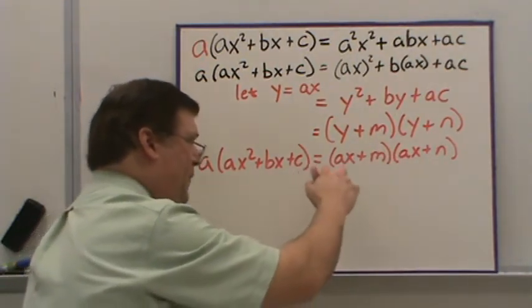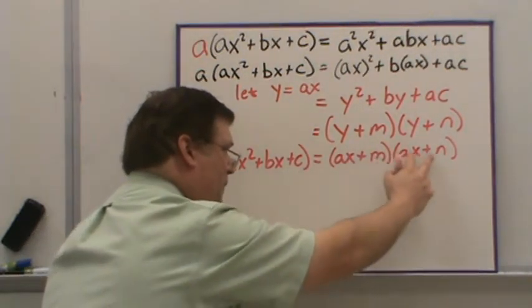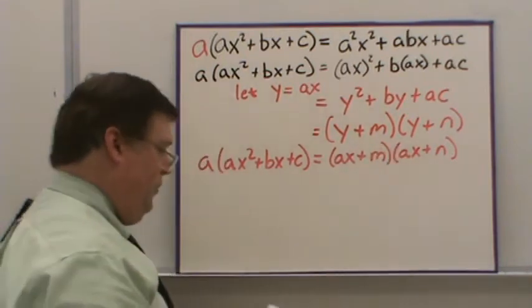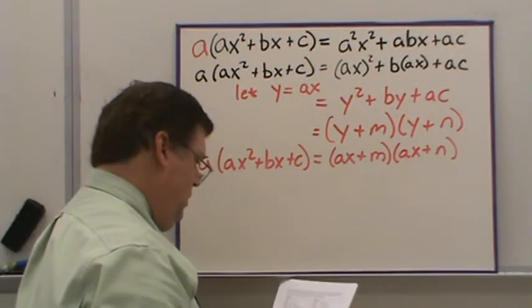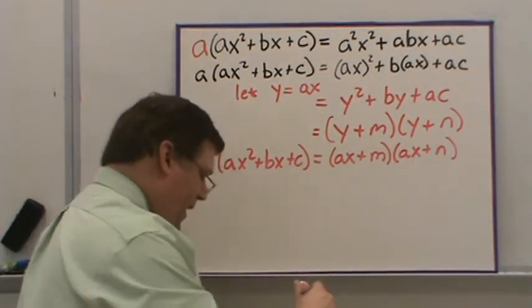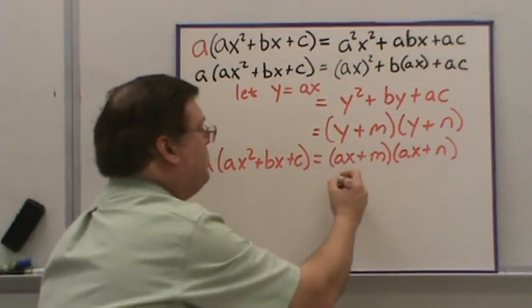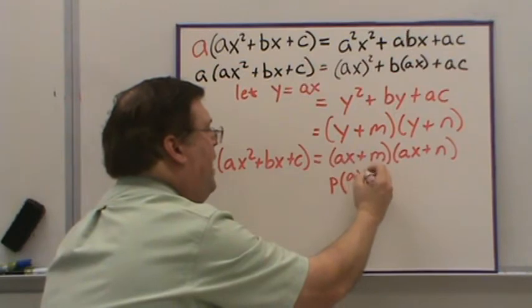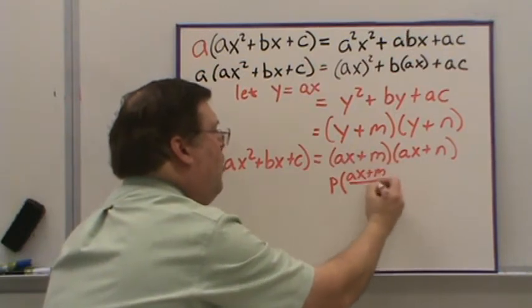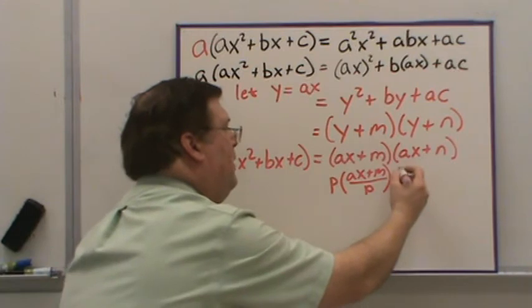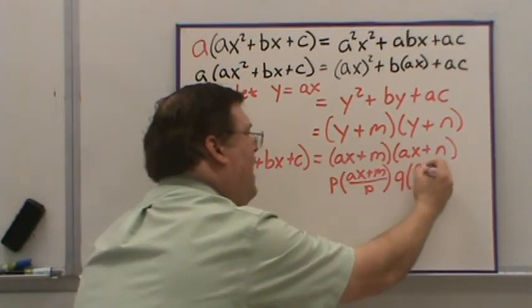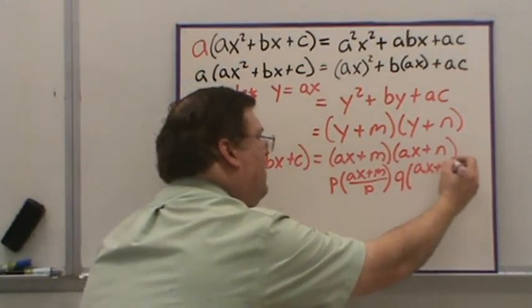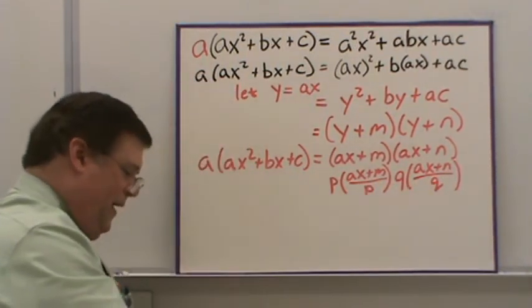Now, if I factor out a common factor from these two, and let's call those common factors P and Q, I'm going to have AX plus M over P times P, and Q is going to be AX plus N over Q, factoring out those common factors.